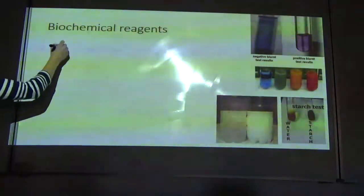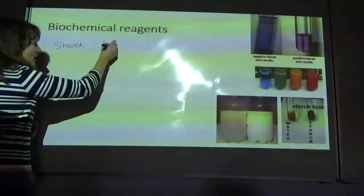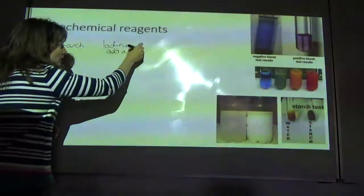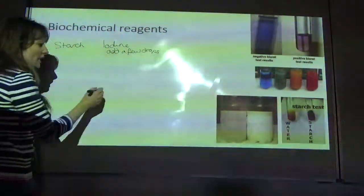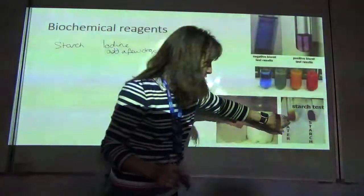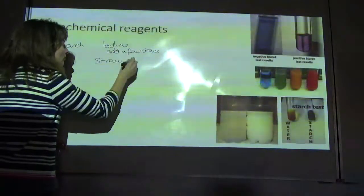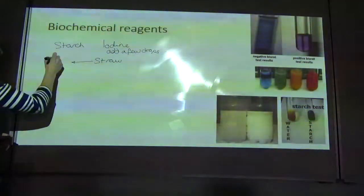First let me start with starch. The test for starch is to add iodine, so just add a few drops. And when you do that, the solution is normally straw colored and it goes to blue black. So that's straw to blue black in the case of starch.